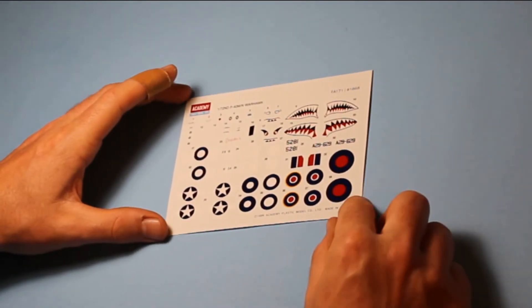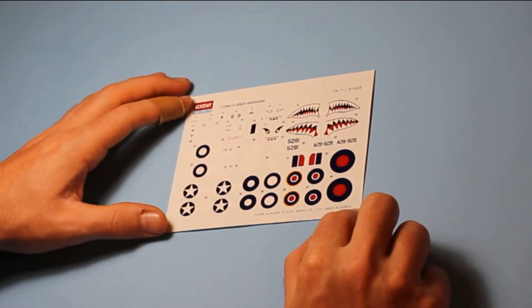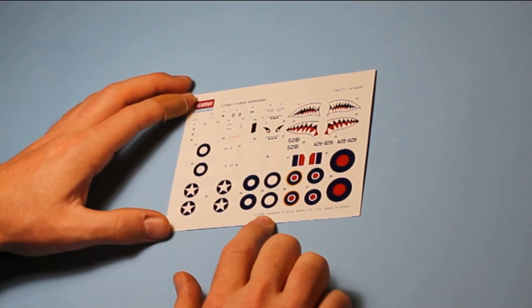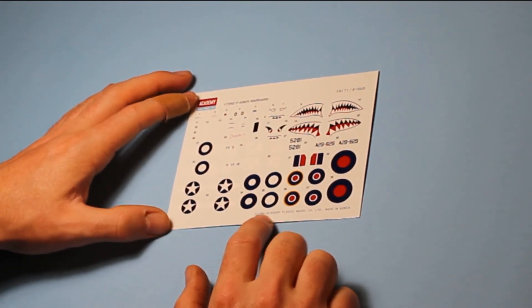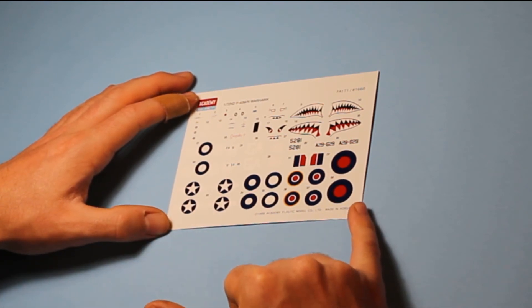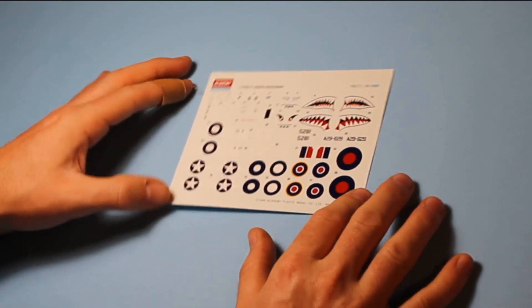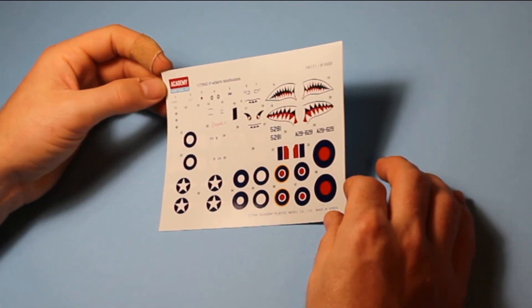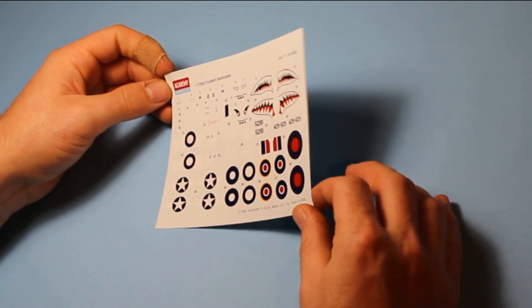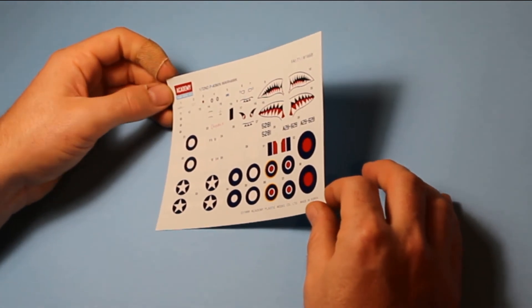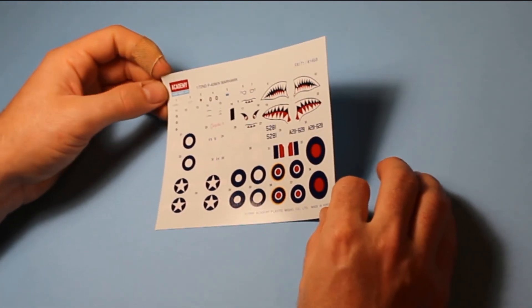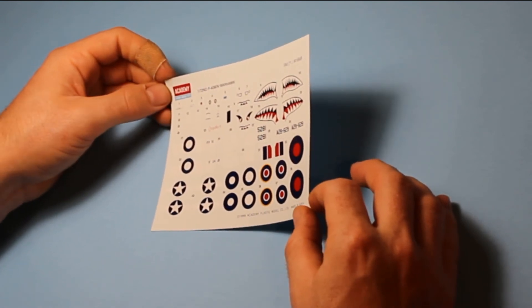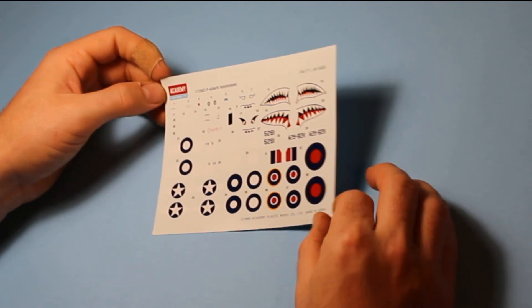Then lastly onto the decals. These are printed in Korea, so they're not Cartograf ones. And these are dated 1999, so that shows you the age of the kit. Very nice register right across. I don't know what they'll be like as far as quality. You can see there's quite a lot of carrier film across them. But I'm sure they'll go on when you use the setting solutions quite well. The color's very rich and very strong. And an extremely good register, absolutely no problem with the alignment or register.